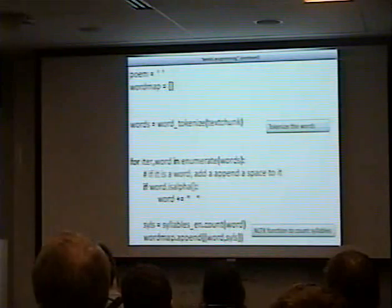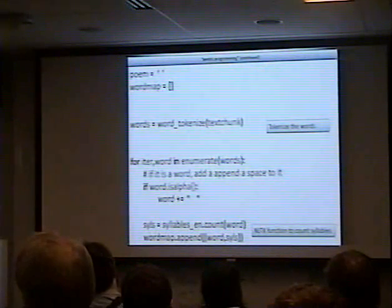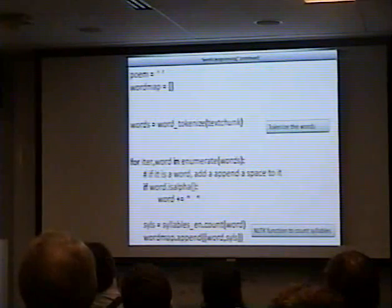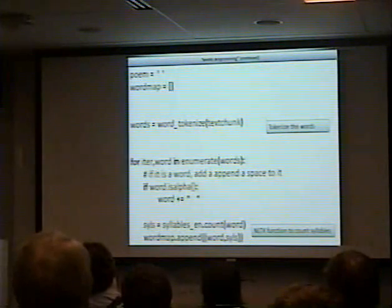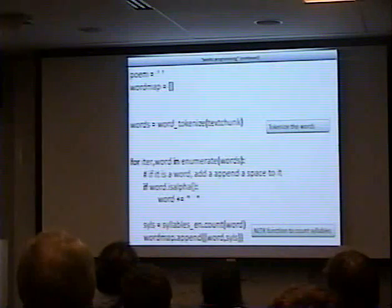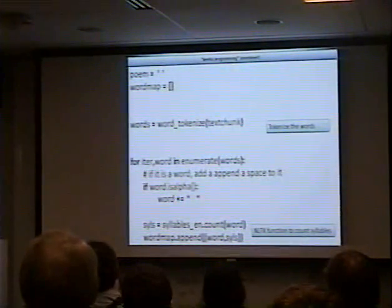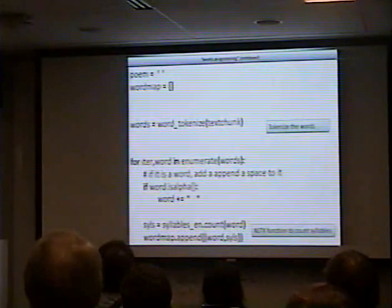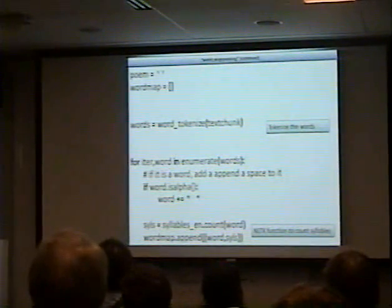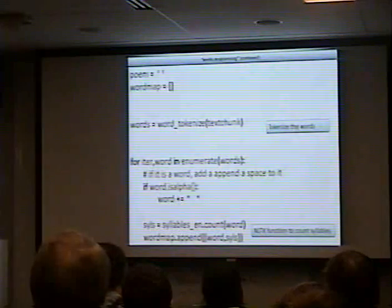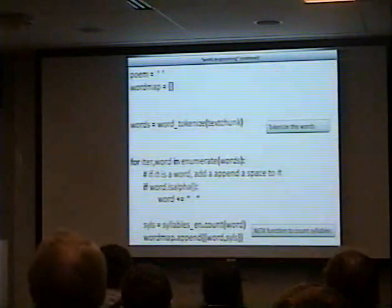We're going to go through each one, and basically if it's alphanumeric, we're going to add it to our word string and append a space to the end of it. Using the English Syllables class, we're going to get a count of the syllables within that word. This is kind of automated — I'm not really sure how it works on the back end, but it gives you a pretty accurate syllable count for any given word.